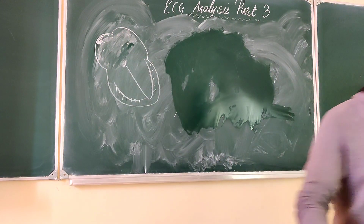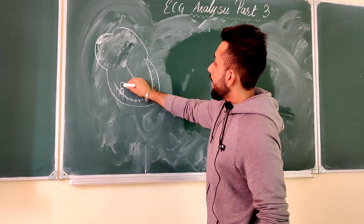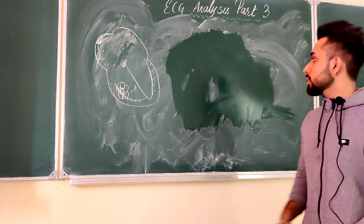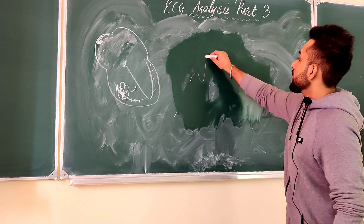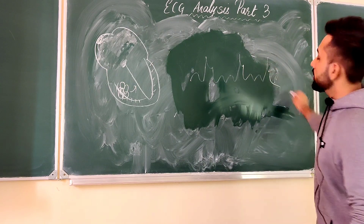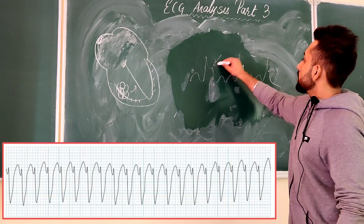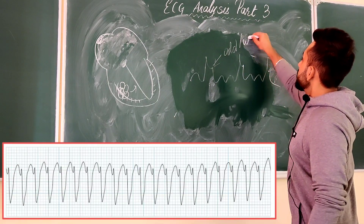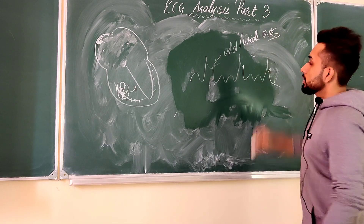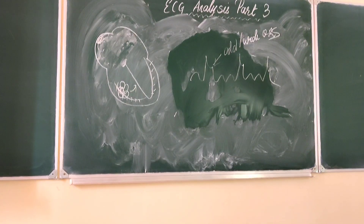In the next abnormal rhythm, impulses originate at a ventricular pacemaker — this is ventricular tachycardia. What you see is a wide or abnormal QRS complex.